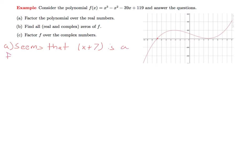We could check this by dividing that into the polynomial. So we take x plus 7 and divide this into the polynomial x cubed minus x squared minus 39x plus 119.